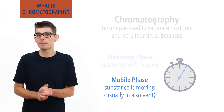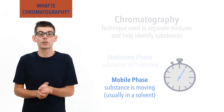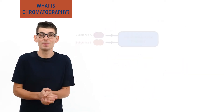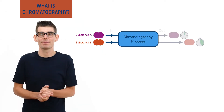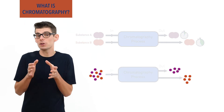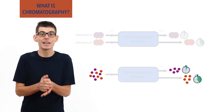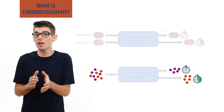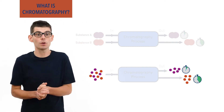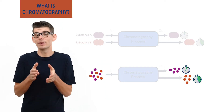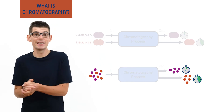Different substances in a mixture spend different amounts of time in each phase, meaning if they all start the chromatography process at the same time they will finish at different times. This allows a mixture to be separated based on how much time each substance spends in each phase. Sometimes substances can be further analyzed as they get separated in chromatography, and substances can even be identified based on the length of time they spend in each phase.